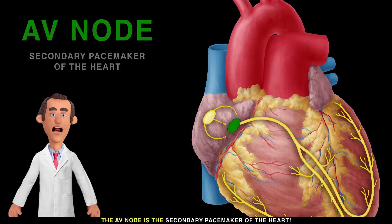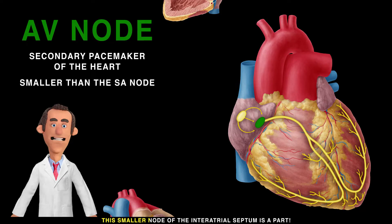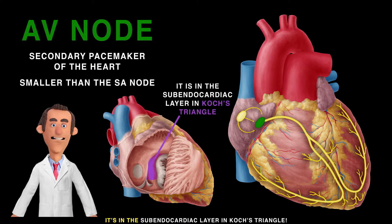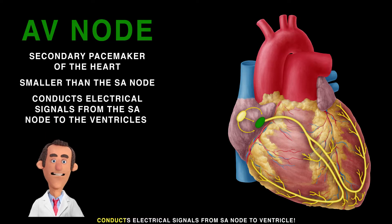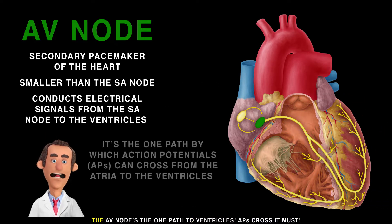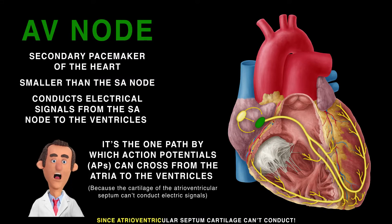The AV node is the secondary pacemaker of the heart. This smaller node of the interatrial septum sits in the sub-endocardial layer in Koch's triangle. It conducts electrical signals from the SA node to the ventricles. The AV node is the one path to the ventricles — action potentials must cross it, since the atrioventricular septum cartilage cannot conduct.